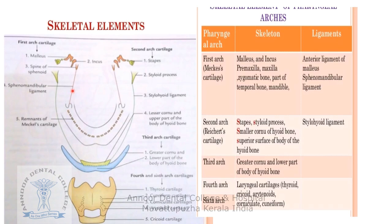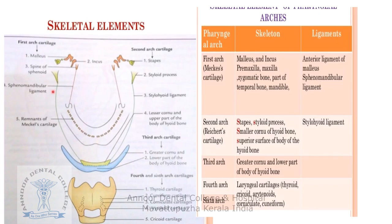The second arch cartilage is known as Reichert's cartilage. Its derivatives include the stapes, styloid process, lesser cornu and upper part of the body of the hyoid bone. The stylohyoid ligament, which is attached between the styloid process and the lesser cornu of the hyoid, is also derived from the second pharyngeal arch.